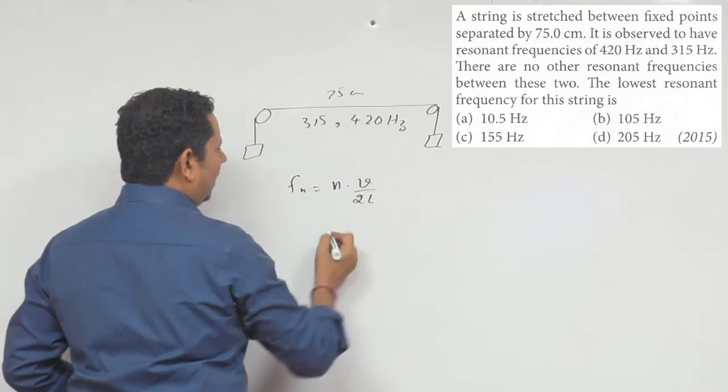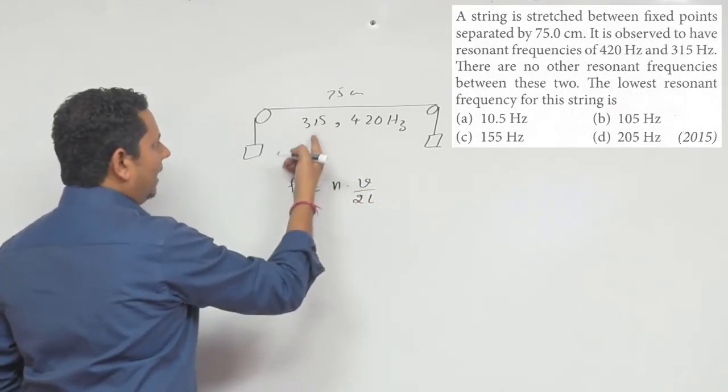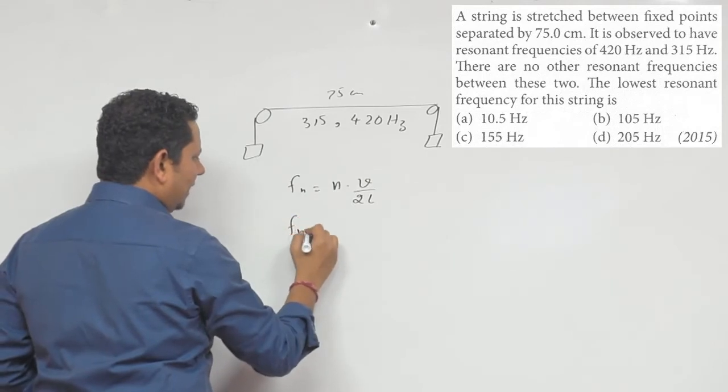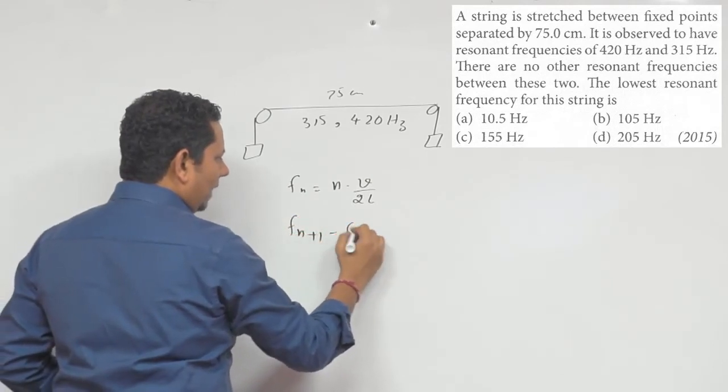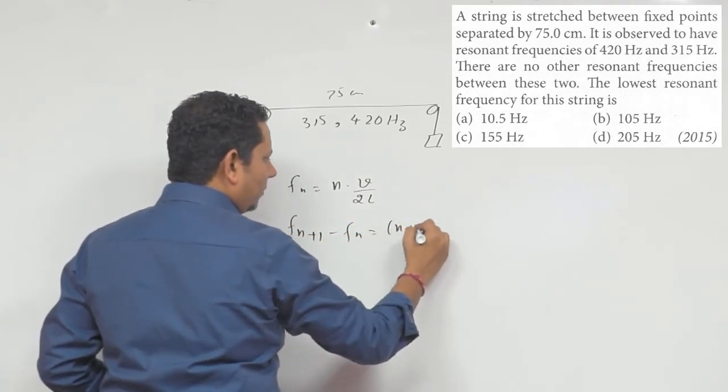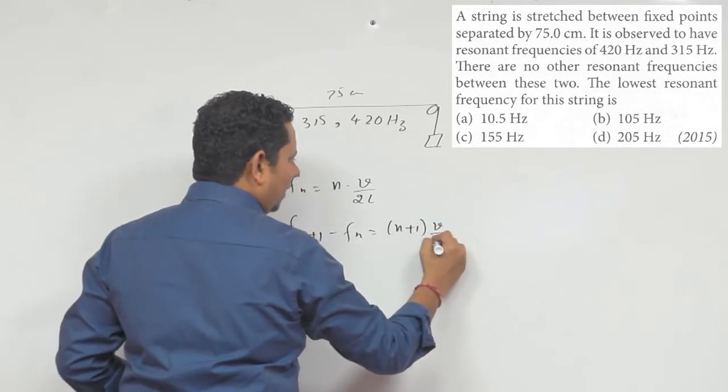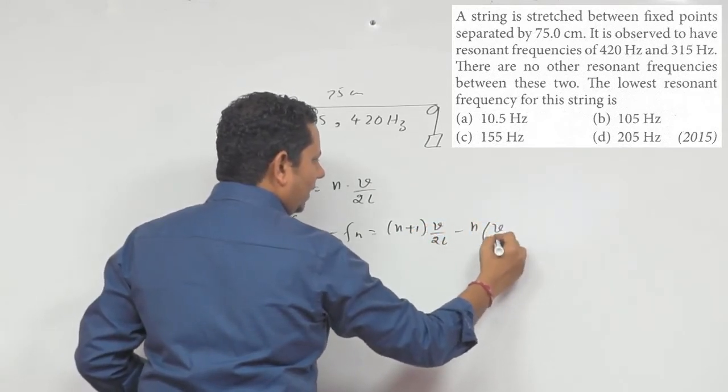If this is fn and this is fn+1, then the difference fn+1 minus fn equals (n+1)v/(2L) minus nv/(2L).